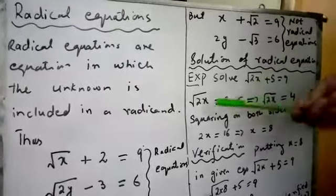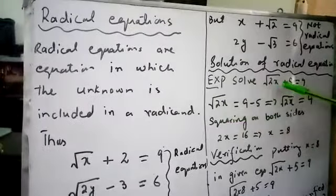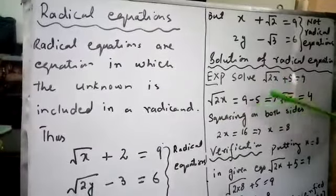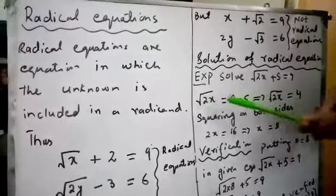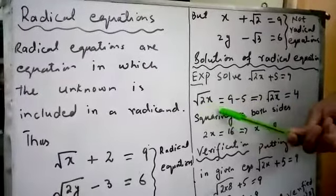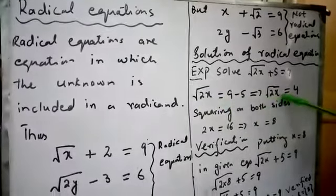First of all, we will isolate radicand. How? We will take 5 on right hand side by changing its sign. So it will become square root 2x equals 9 minus 5 which gives 4.